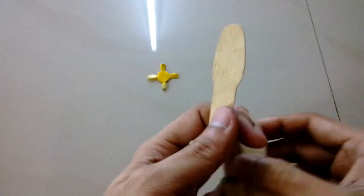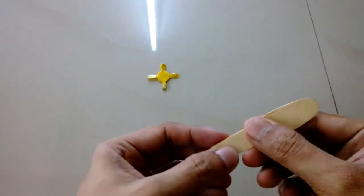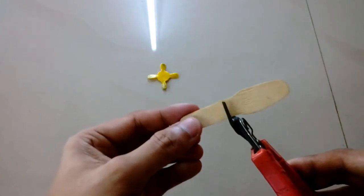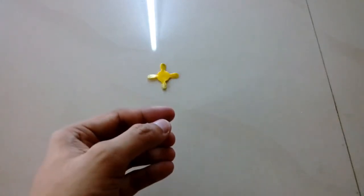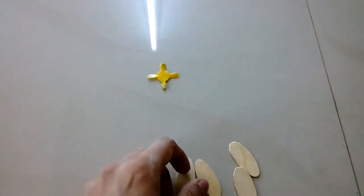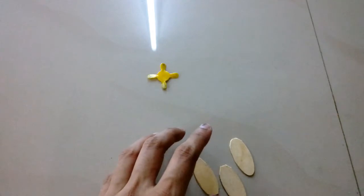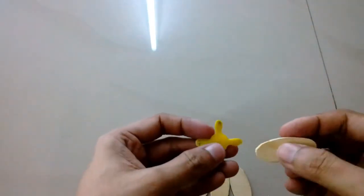I sliced the top portion of the ice cream sticks using my cutter, and that top portion becomes the blade. I'm going to use super glue to fix these wooden ice cream sticks on the edge.